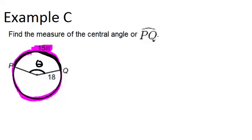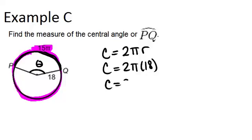So the full circumference is 2π times the radius, so that would be 2π times 18, or 36π. So the full circumference is 36π, and our arc length of PQ is only 15π.